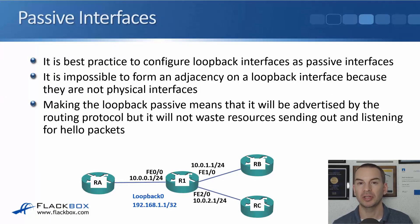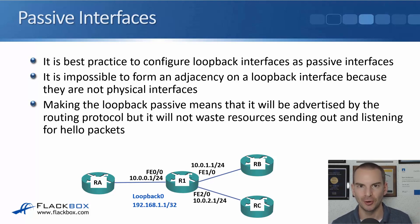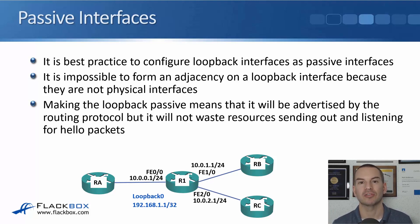It's best practice to always configure your loopback interfaces as passive interfaces. This is because it's impossible to form an adjacency on a loopback — it's not a physical interface, it's logical, so no other router can ever be directly connected to it. Making the loopback passive means it will still be advertised by the routing protocol, which we want so other routers learn how to reach it, but we don't waste resources sending out and listening for hello packets on a link where there will never be another router. Always make your loopbacks passive interfaces.